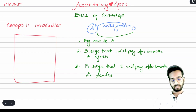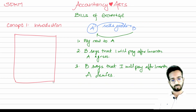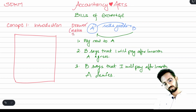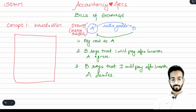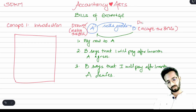That is why A becomes the drawer of the document. The person who draws — or in accounting terms, makes — the document is called the drawer. So A is the drawer because he is the person who makes the bill. B will accept that bill, and because B accepts it — meaning B says 'I will pay you after one month' — we call B the drawee.